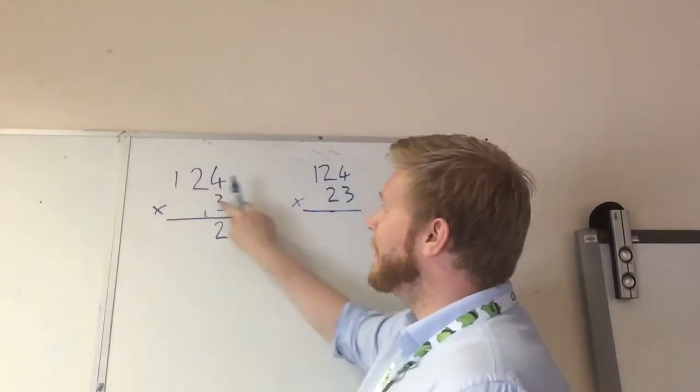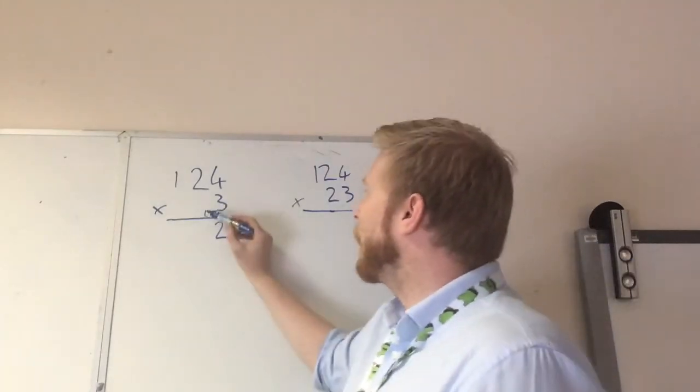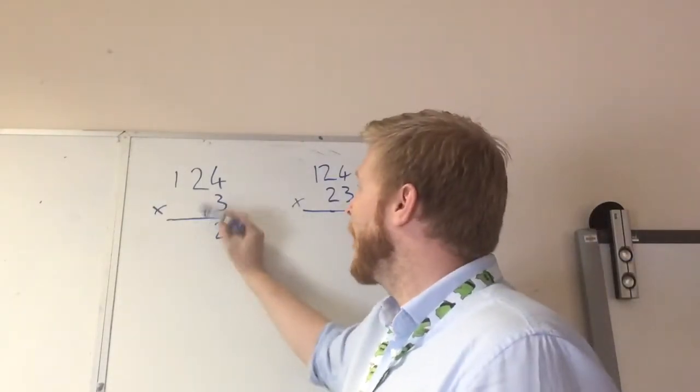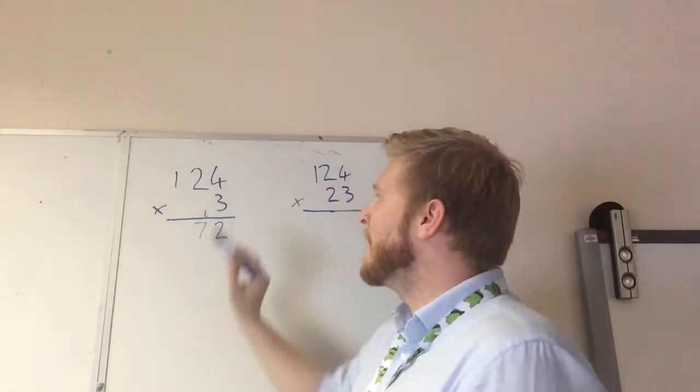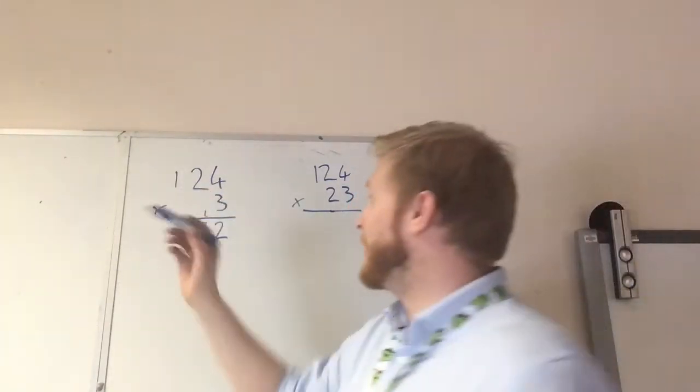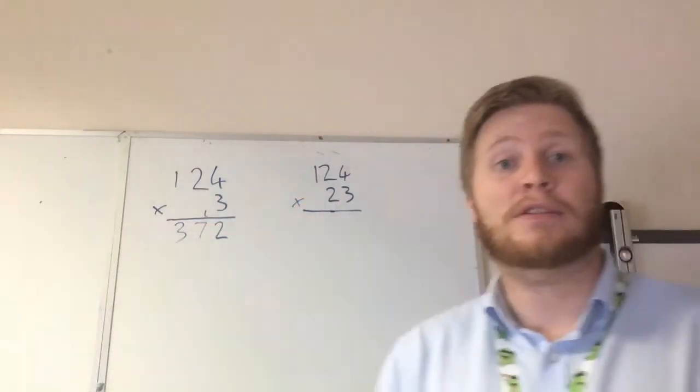And we're going to do 3 times 2. So 3 times 2 is 6, but remember we've got our 1 on the doorstep, as some people like to call it. So 6 plus our 1 is 7. Then last, you've got a nice easy sum, 3 times 1. So 3 times 1 is 3, and we get our answer, which is 372.